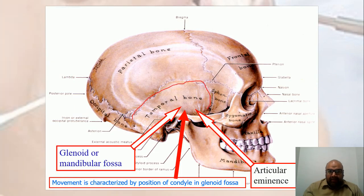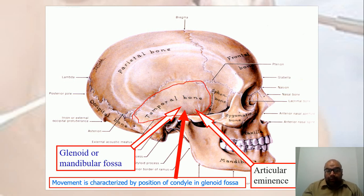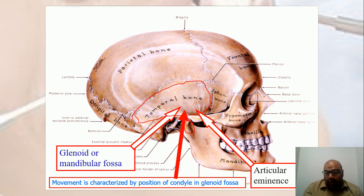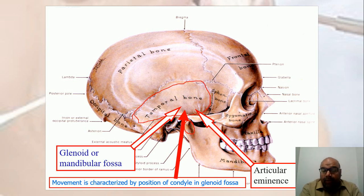The temporal bone articulates with the condylar process of the mandible — the condylar head of the mandible. That is why it is known as the temporomandibular joint, since it involves the temporal bone of the skull along with the condylar process or condylar head of the mandible.